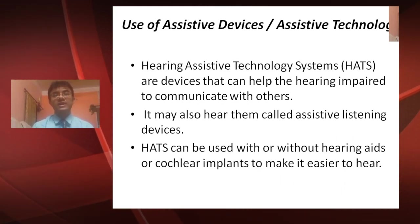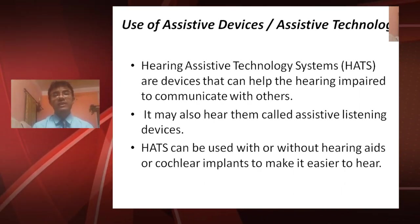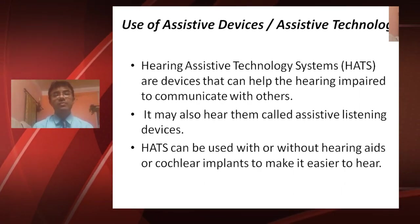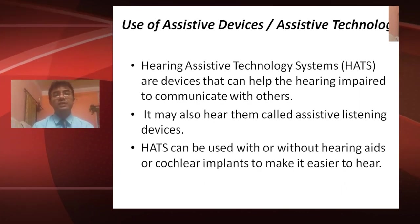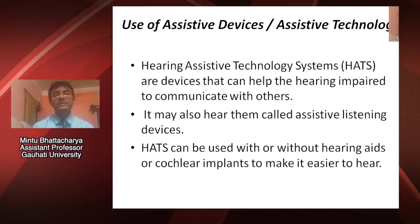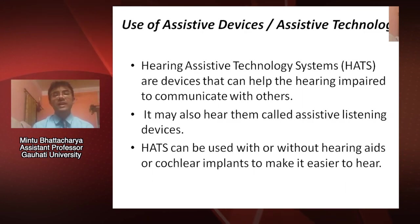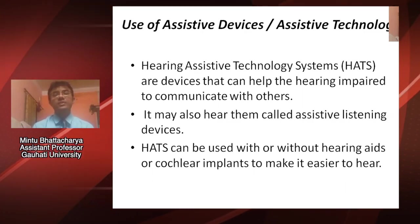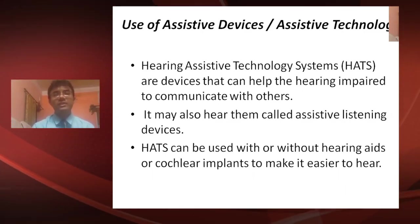The use of assistive devices and assistive technology is very important for students with hearing impairment. Hearing Assistive Technology Systems (HATS) are devices that help hearing-impaired individuals communicate with others. Also called assistive listening devices, they can be used with or without hearing aids or cochlear implants to make hearing easier.